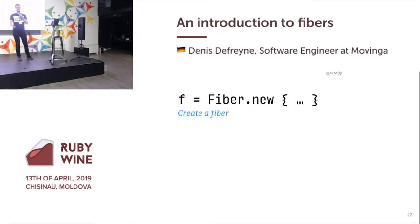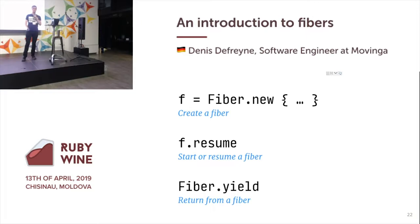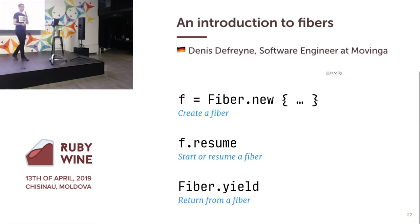To summarize: you can create a Fiber with Fiber.new, you can resume a Fiber with the resume method, and you can use Fiber.yield to return or suspend a Fiber. That is the end of the first half of the basics, so let's continue.